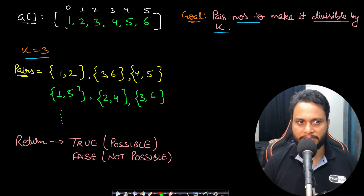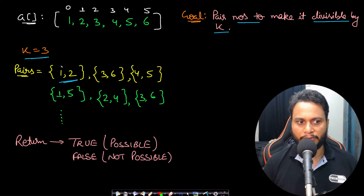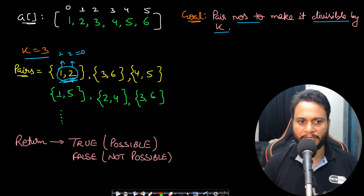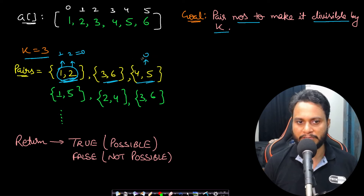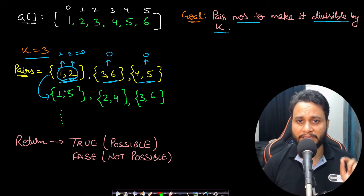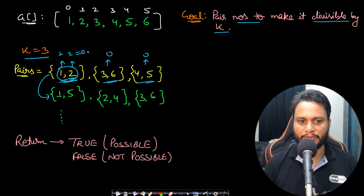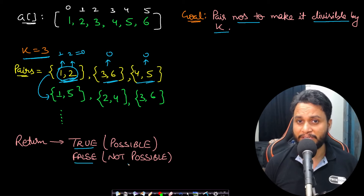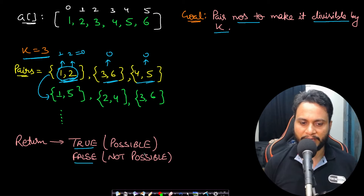We can pair 1 and 2: 1 mod 3 is 1 and 2 mod 3 is 2, so adding them gives mod k equals 0. Similarly pairing 4 and 5 gives mod k equals 0 as well. There can be more than one such way, but if there is at least one way to pair the items so that the sum is divisible by k, return true; otherwise return false.